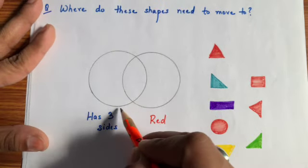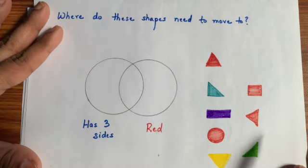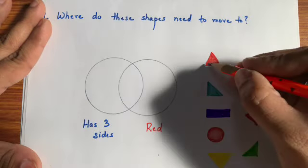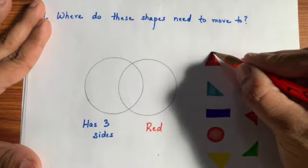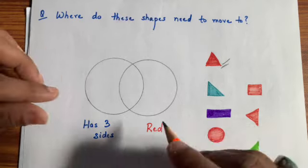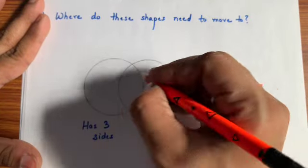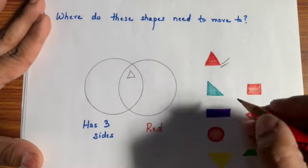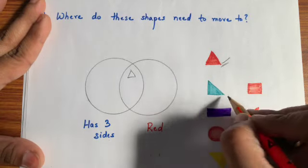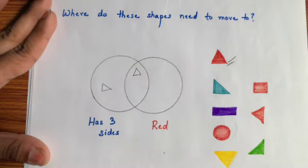Yahaan pe is circle mein woh shapes honge jinke teen sides hoote hai. To teen sides kiske hoote hai? Triangle ke. Right. And yahaan pe woh shapes honge jo red hai. Ab triangle teen sides and red, to ye ek aisa shape hai jo dono conditions ko meet kar raha hai. Teen sides bhi hai, red bhi hai. To isko haam kahaan banaayenge? Yahaan pe karenge. Blue triangle to teen sides wala criteria to ye meet kar raha hai, but color ka criteria nahi meet kar raha hai. To haam isko kahaan pe karenge? Yahaan pe karenge.